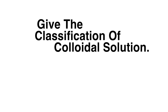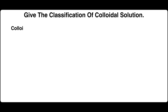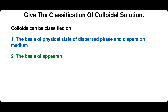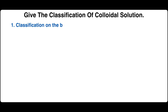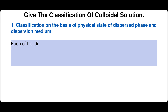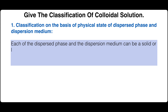Give the classification of colloidal solutions. Colloids can be classified on the basis of the physical state of the dispersed phase and dispersion medium, or they can be classified on the basis of appearance, or they can be classified on the basis of solvent affinity. Let's discuss the classification on the basis of physical state of dispersed phase and dispersion medium. Each of the dispersed phase and the dispersion medium can be a solid, liquid, or gas.